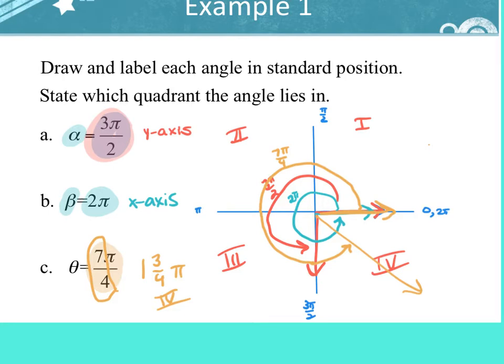Regarding whether angles on the axes have different answers: both π and 2π land on the x-axis. You'd say x-axis for both of them.